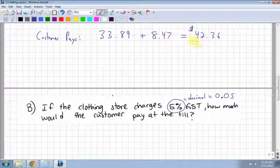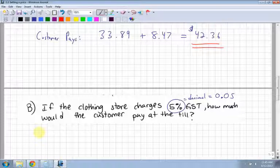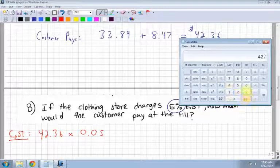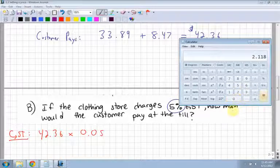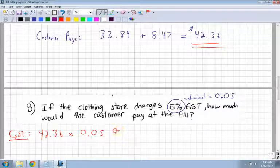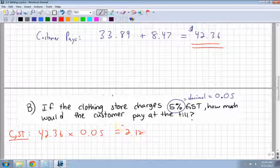I take my original price, or the price the customer pays, which is $42.36. I have to multiply it by my 0.05. This is the GST. $42.36 times 0.05, I get $2.11 or $2.12, because it's going to round up. $2.12 for my GST.